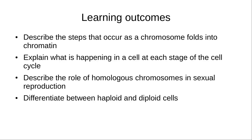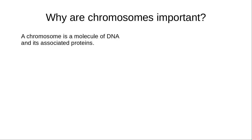The second part will actually talk about homologous chromosomes, so you should be able to describe what homologous chromosomes are, as well as the role of homologous chromosomes in sexual reproduction, as well as differentiate between haploid and diploid cells. But first, let's start with what is a chromosome.